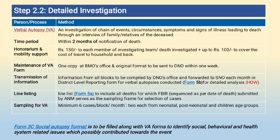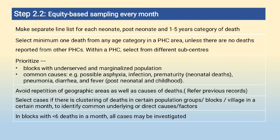Form 5A includes all dates for which FBIR was submitted by ANM. Form 5A is the sampling frame for selection of cases — sampling of verbal autopsies. Minimum six cases per block per month. Form 3C is the social autopsies format, used to identify social, behavioural, and health system related issues which possibly contributed towards the event. Equity based sampling every month.